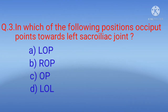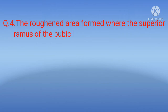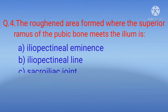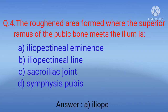Question 4: The roughened area formed where the superior ramus of the pubic bone meets the ilium is — options: A) iliopectineal eminence, B) iliopectineal line, C) sacroiliac joint, D) symphysis pubis. The correct option is A) iliopectineal eminence.